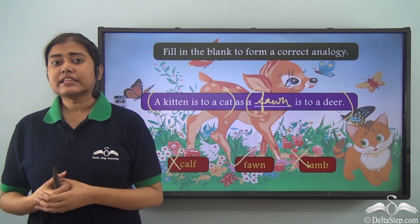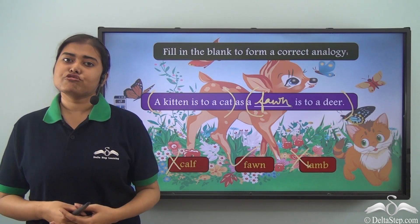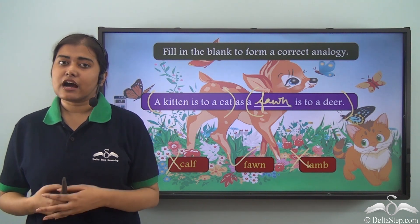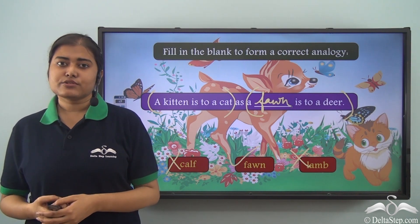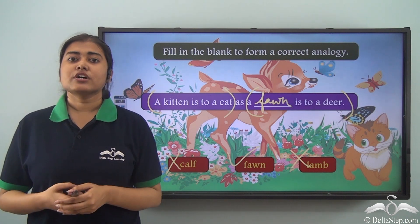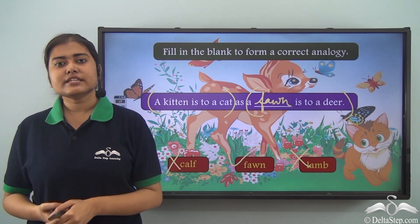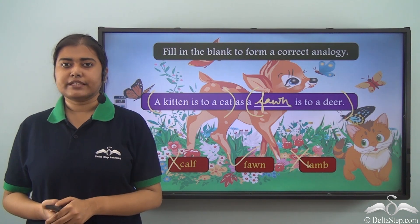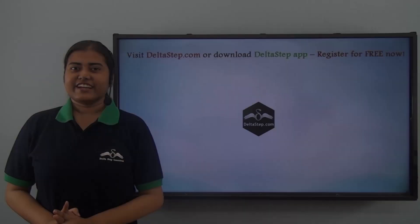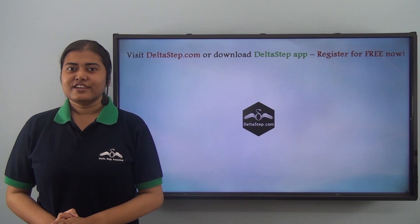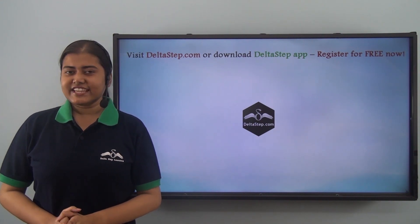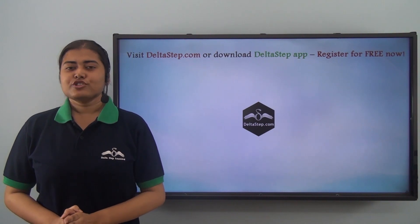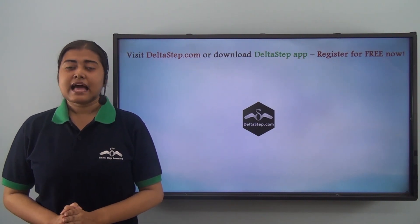So what did we learn today? We learned how to draw an analogy between two pairs of words. To do so, we need to find a relationship of similarity between the two sets of words and match them properly. Don't forget to subscribe to our channel. You can also register for free at Deltastep.com or download the Deltastep app to get all learning resources.